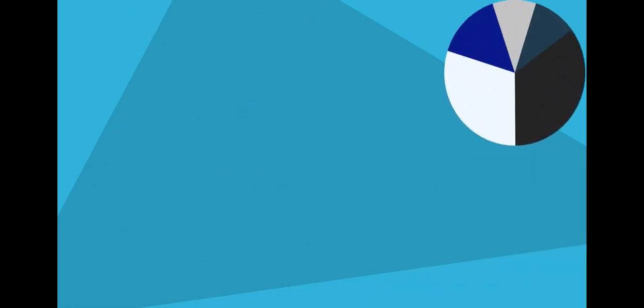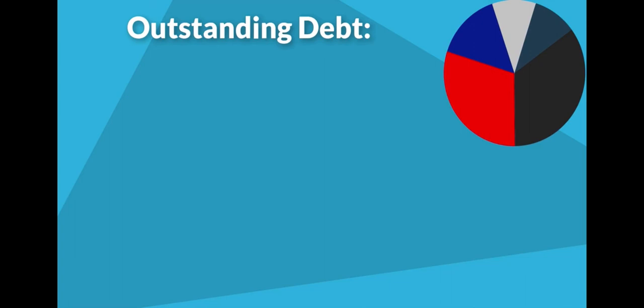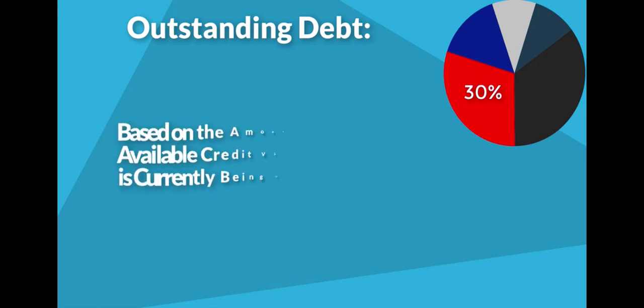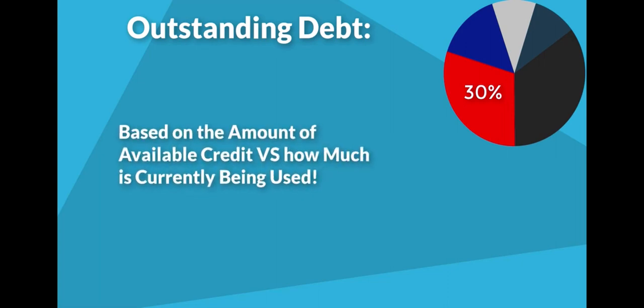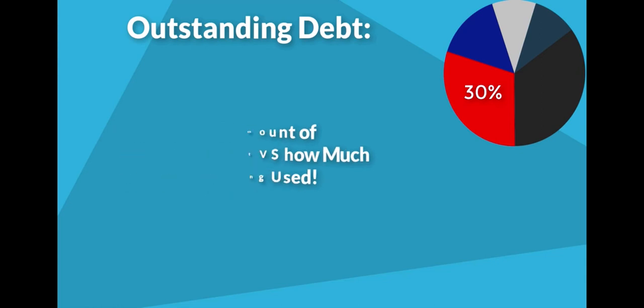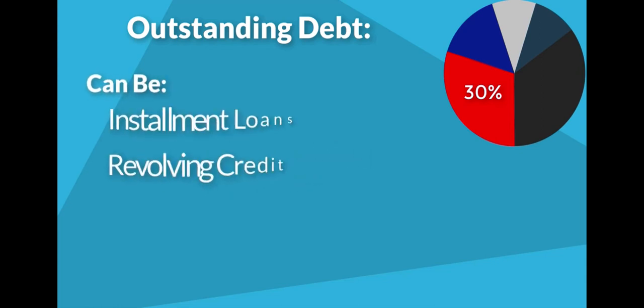The next factor in your credit score is your outstanding debt, or what you still owe on your accounts, and it makes up 30% of your overall score. This factor is based on the amount of available credit you have versus how much you are using, and can be broken down into two parts: revolving credit and mortgage and installment loans.